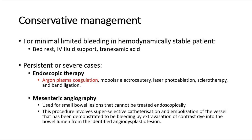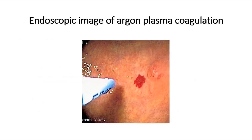Mesenteric angiography is used for small bowel lesions that cannot be treated endoscopically. This procedure involves super-selective catheterization and embolization of the vessel that has been demonstrated to be bleeding by extravasation of contrast dye into the bowel lumen from the identified angiodysplastic lesion. This is an endoscopic image during argon plasma coagulation of the angiodysplasia.